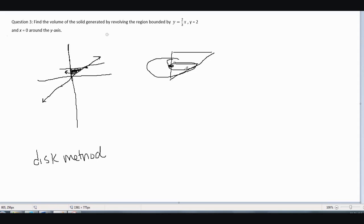Starting with y = (2/3)x, we multiply both sides by 3/2 to get x = (3/2)y. That's our radius.